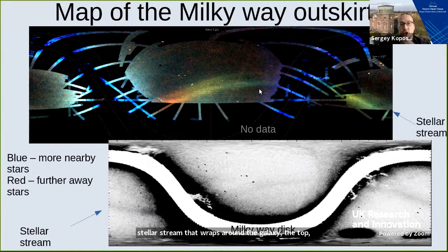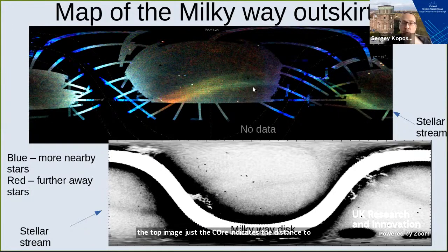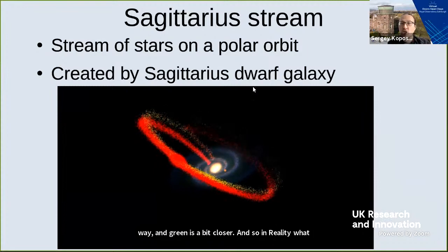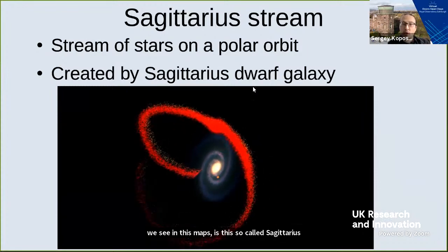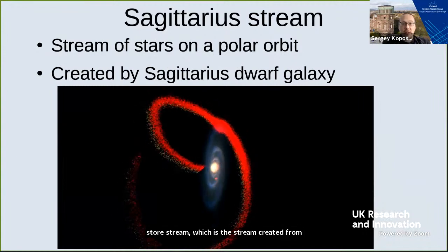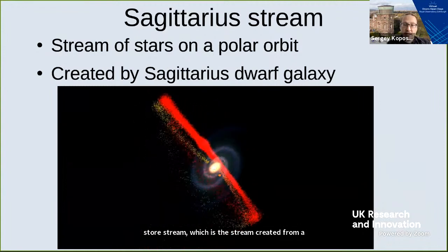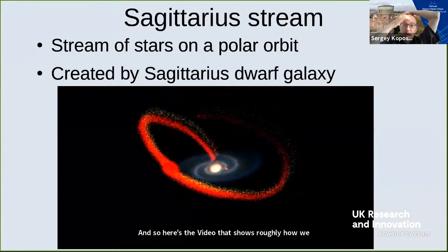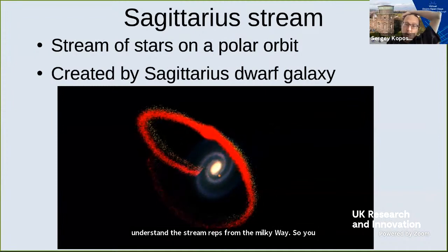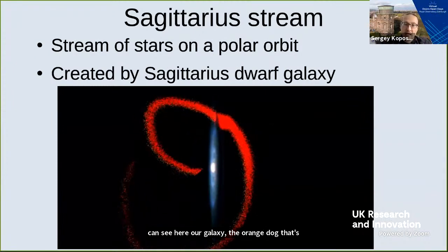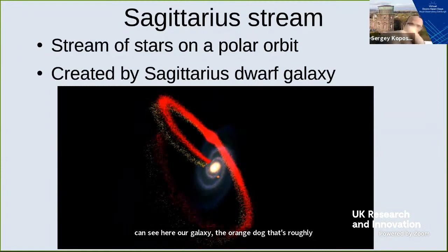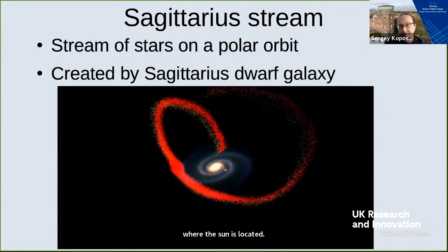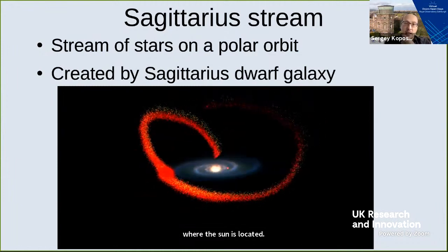What we see in these maps is the so-called Sagittarius stream, which is a stream created from the disruption of a dwarf galaxy. Here is a video that shows roughly how we understand this stream wraps around the Milky Way. You can see our galaxy here, and the orange dot is roughly where the sun is located. This stream basically loops around our own Milky Way — it is really the biggest stream in the Milky Way.